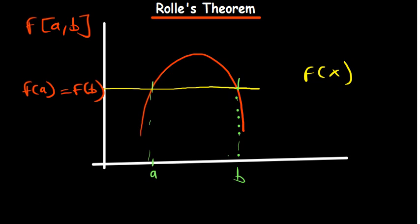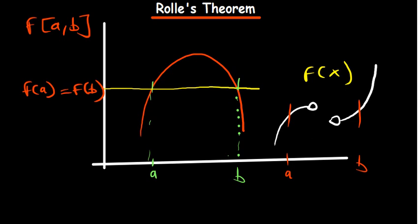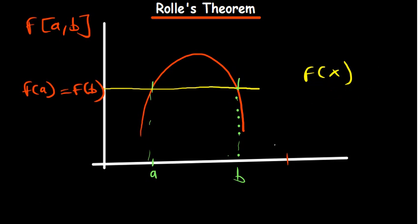By continuous, it means there is no part of the function where we expect it not to exist — things like asymptotes or discontinuous functions, especially piecewise functions. For example, if you draw a function and there's a point where there is a gap or disconnection, such a function — if we take a range a to b — Rolle's Theorem cannot apply because it is discontinuous at that point.